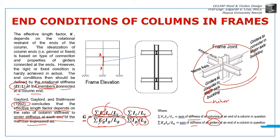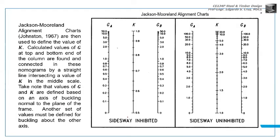Now, once you've solved GA at the top and GA at the other end of the column GB, when you know GA and GB, we may use this chart - the Jackson-Moorland alignment chart.